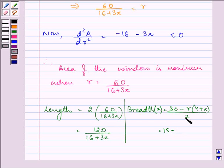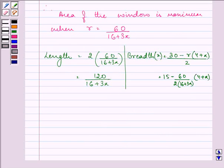So, we have, 60 upon 2, in the bracket, 16 plus 3 pi, into 4 plus pi, which is equal to, 15 minus, 30 upon 16 plus 3 pi, times 4 plus pi.